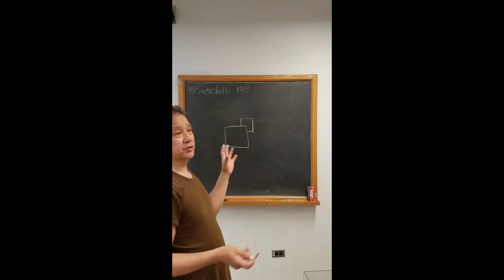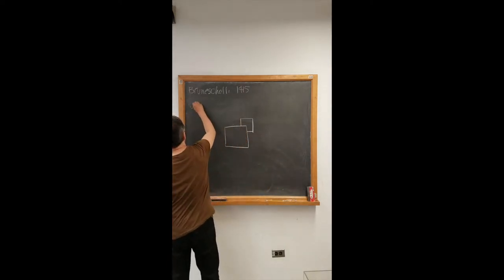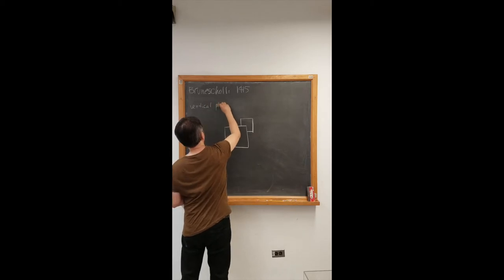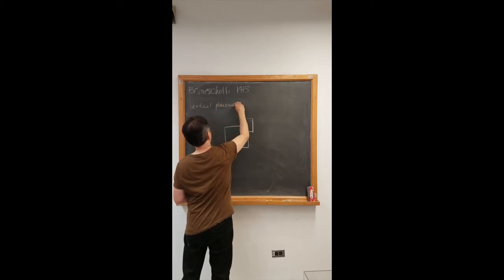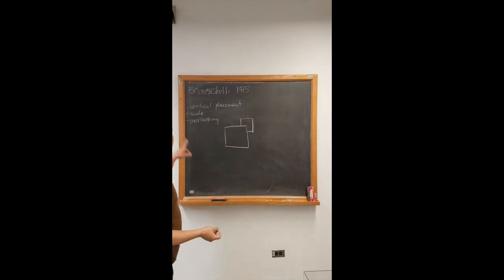So just to summarize, we have vertical placement, we have the use of scale, and we have vertical placement, scale, and overlapping. That's what I've just run through.